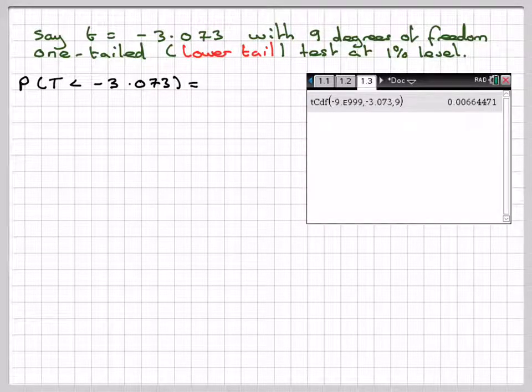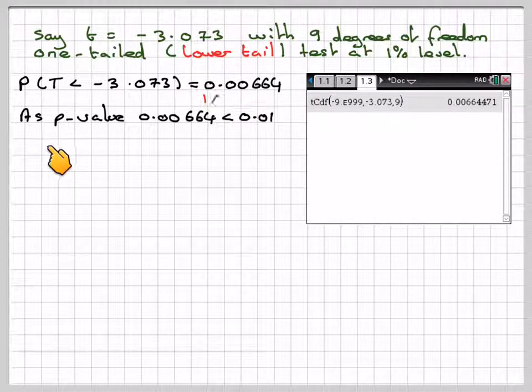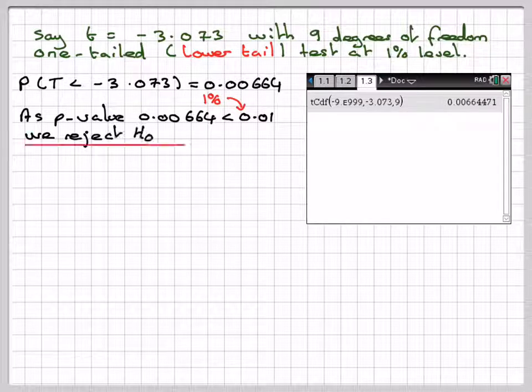This is the p-value for that particular test. As the p-value 0.00664 is less than 0.01 (1%), we reject H₀, because this value is so small it's actually in the end tail.